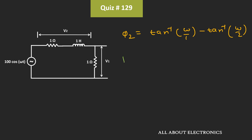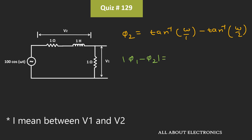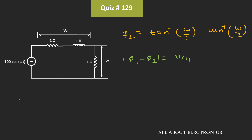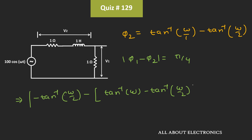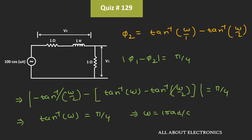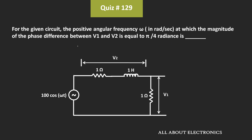We have been given that the magnitude of the phase difference between Φ1 and Φ2 is equal to π/4 radians. From this we can say that the tan⁻¹(ω/2) terms cancel out, leaving |tan⁻¹(ω)| equal to π/4. This is possible when ω equals 1 radian per second. So the phase difference between V1 and V2 is π/4 radians when ω equals 1 radian per second.